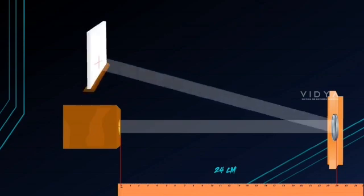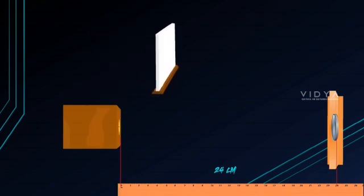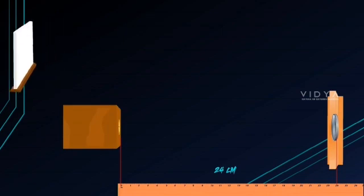Now on the screen, the image of the object is visible. With the object-mirror distance, that is u equals 24 cm, adjust the screen position so that we get a clear image of the object.